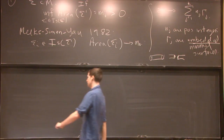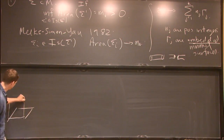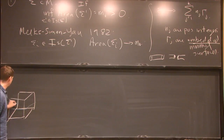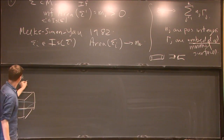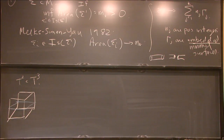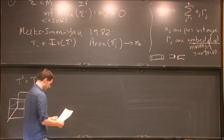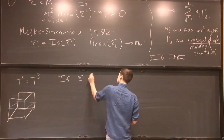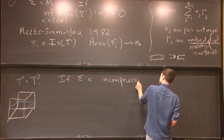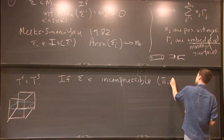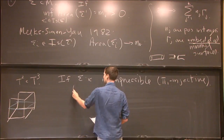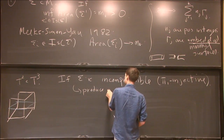A good example is just the torus: if I take a T² in T³ and I have some wiggly torus, I can minimize area and produce a stable minimal torus. The consequence is that if Σ is incompressible — meaning π₁-injective — then this process produces a surface isotopic to the one you started with. So you produce an isotopic minimal surface.